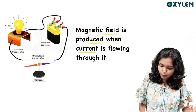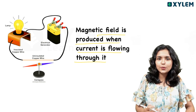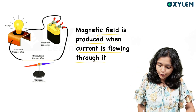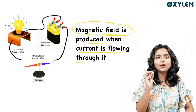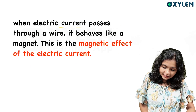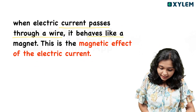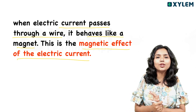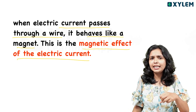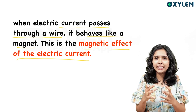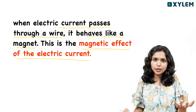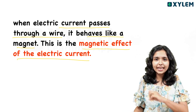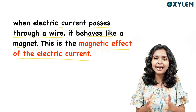A magnetic field is produced when current is flowing through a conductor. When an electric current passes through a wire, it behaves like a magnet. This is the magnetic effect of electric current. Similarly, when an electric current is passing through the conductor, it will act as a tiny magnet.